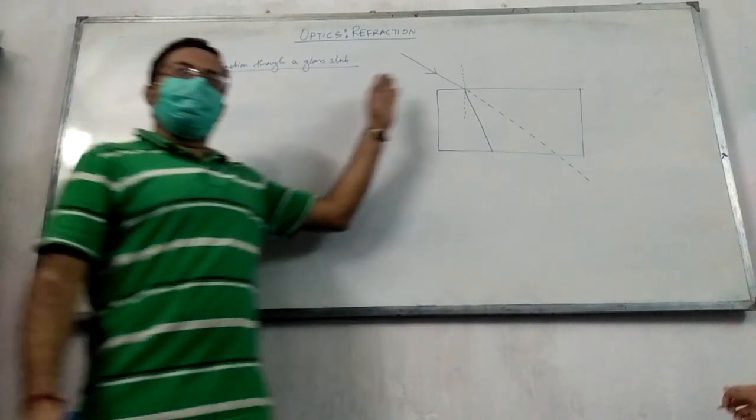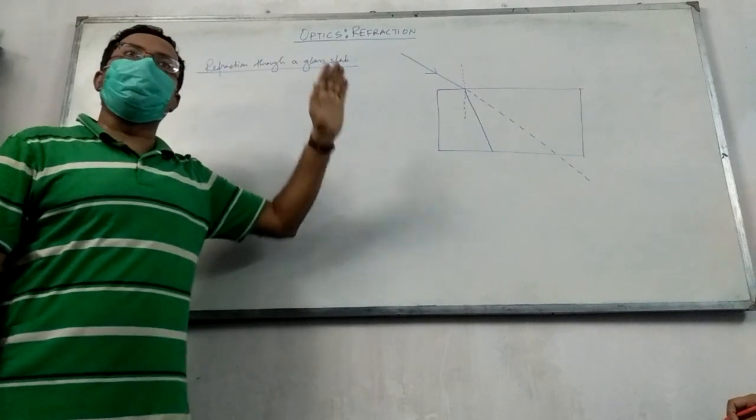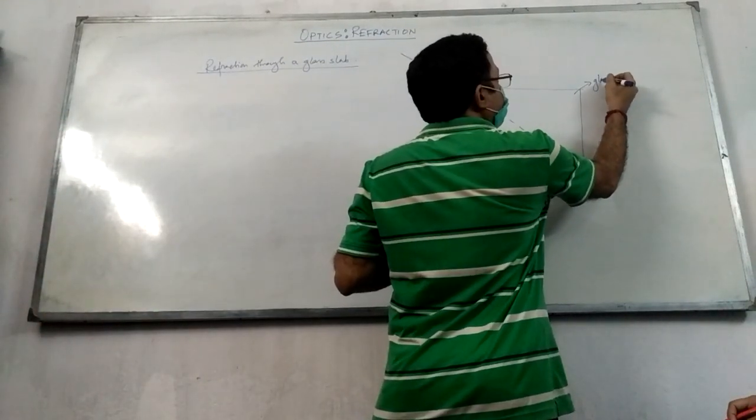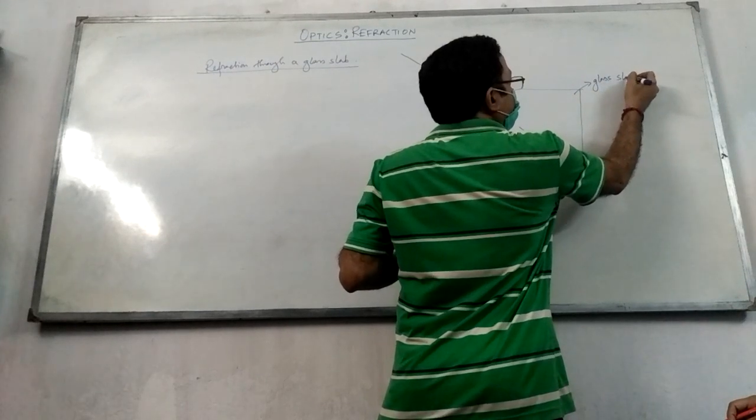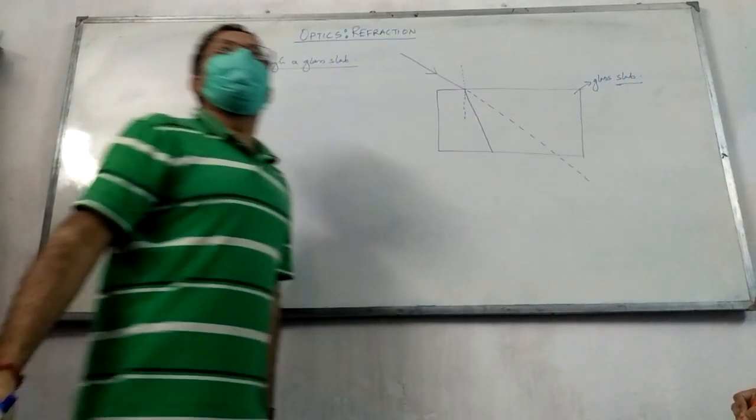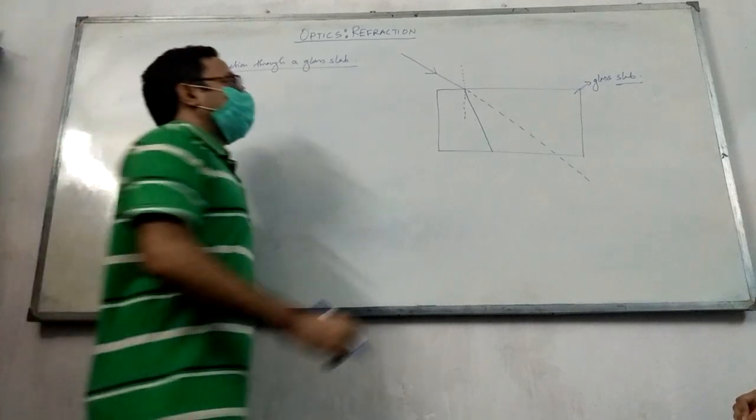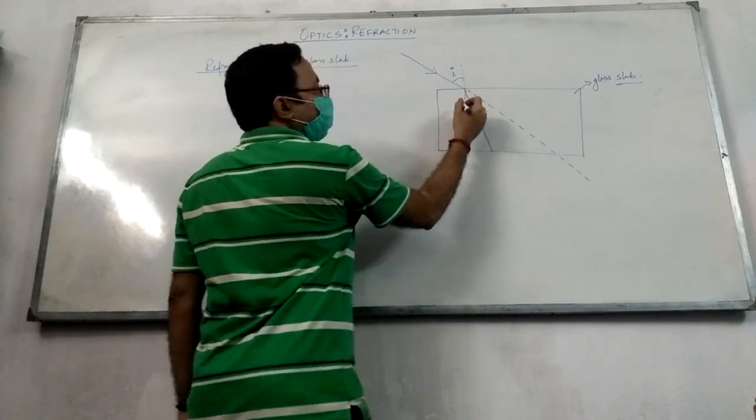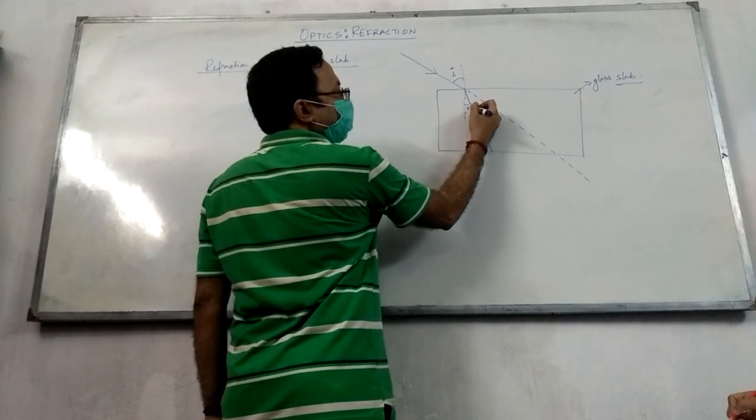It should have gone this way but it is moving from rarer medium to denser medium. So this is for our glass slab. So this is the angle of incidence i, this is the first angle of refraction r1.